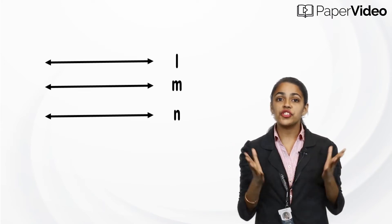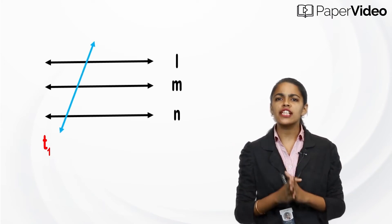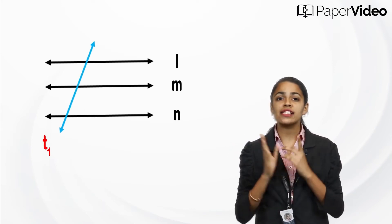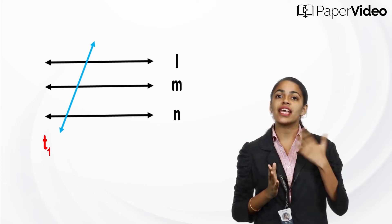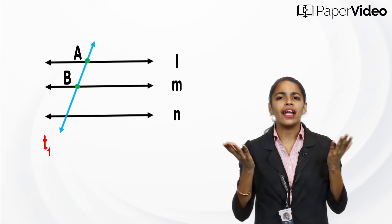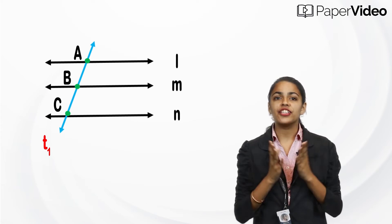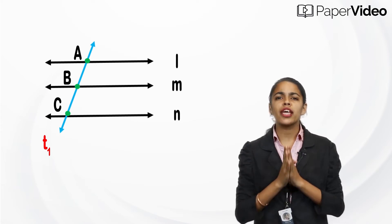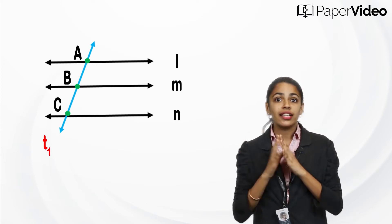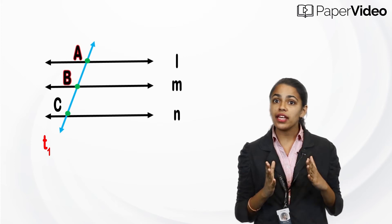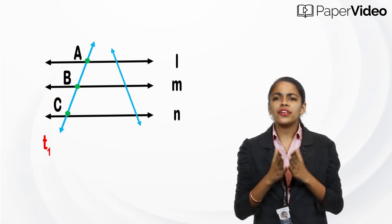Let's draw a transversal t1 of these parallel lines, intersecting them at points A, B, and C. The transversal t1 is making two intercepts here, that is AB and BC. Let us now draw another transversal t2.